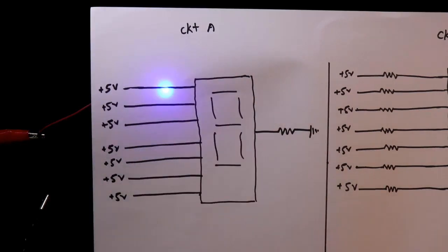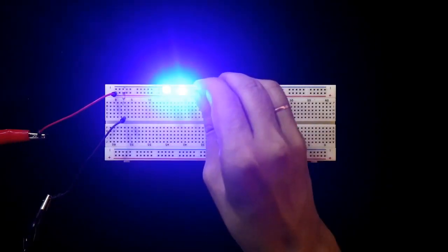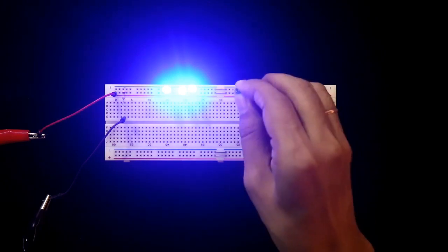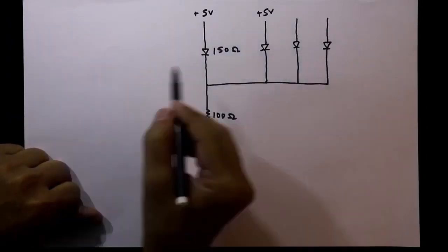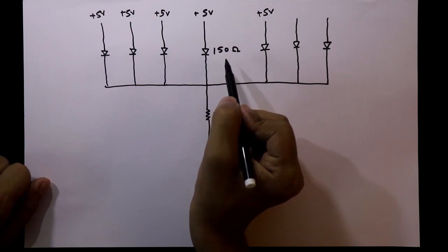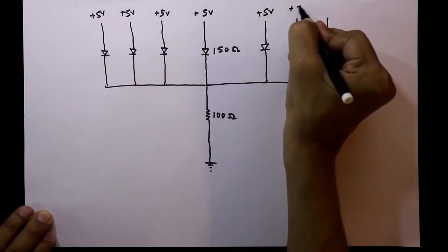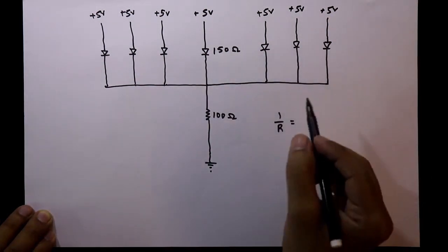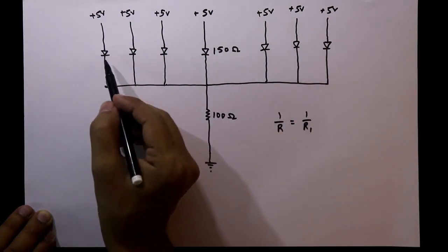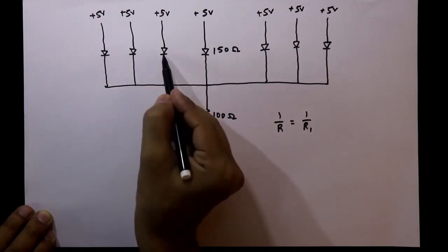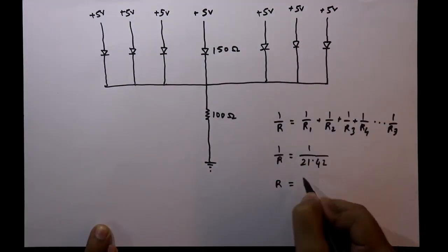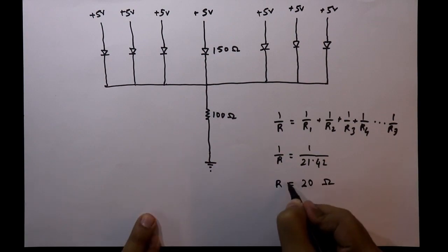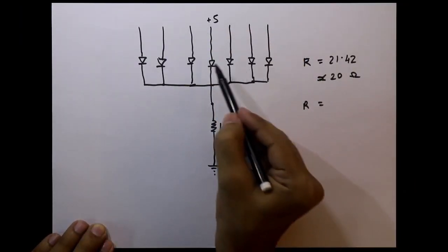Now if we connect according to the single-resistor circuit, all the positive pins of the LEDs are connected to plus 5 volts, connecting them one by one. You can see that increasing the number of LEDs results in decreasing brightness. This is because we have connected seven LEDs in parallel, each with 150 ohms internal resistance, giving an equivalent resistance of 1/(7 × 1/150) ≈ 21.42 ohms, so R equals approximately 20 ohms.